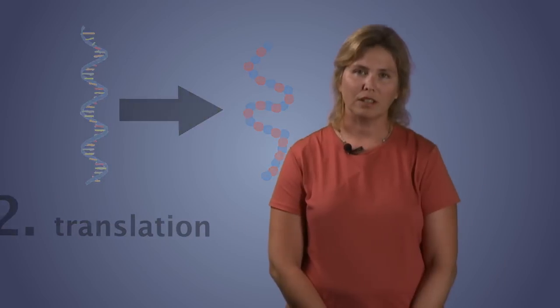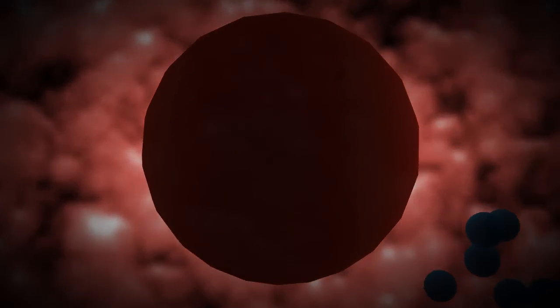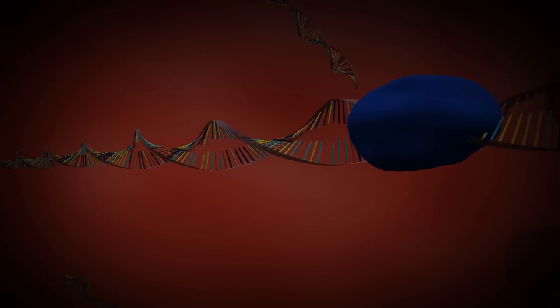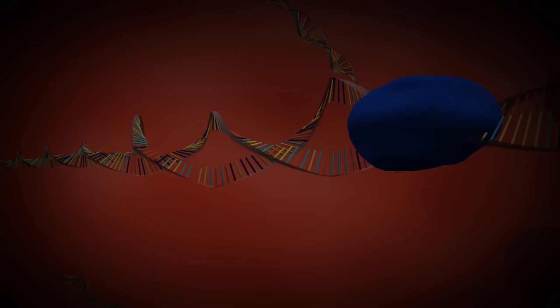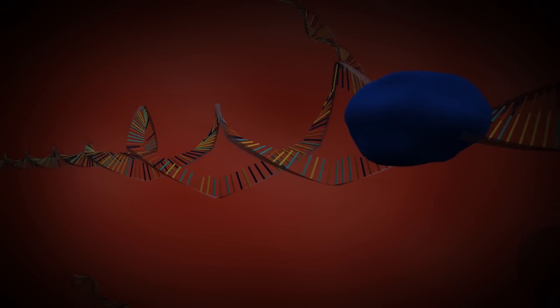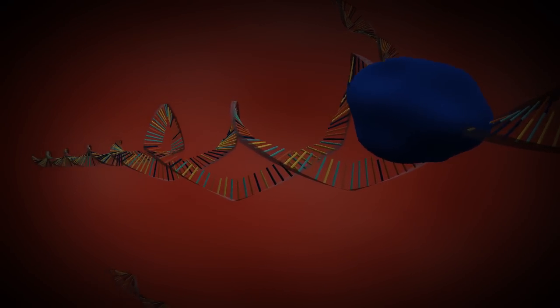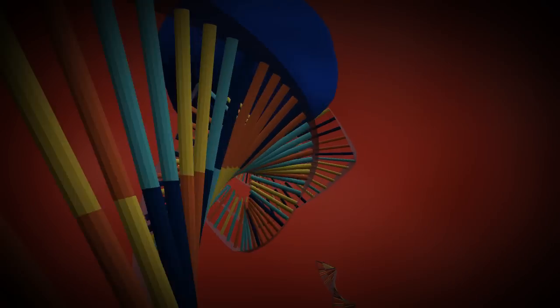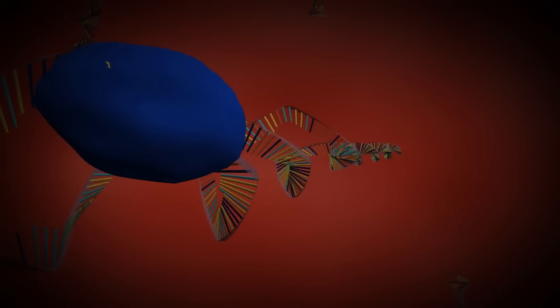Let's take a quick look at how the process of gene expression occurs in a human red blood cell. In the nucleus of a human red blood cell, we find the gene that codes for one of the subunits of the hemoglobin protein. When oxygen levels fall, chemical signals trigger the expression of this gene. In this animation, you can see the process of transcription occurring.